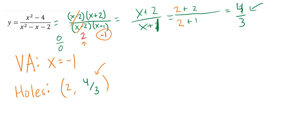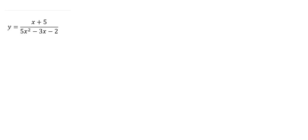It seems like a lot, but with a little bit of practice — like everything with graphing rational functions — it gets easier. For holes and vertical asymptotes, my first step is always to factor.